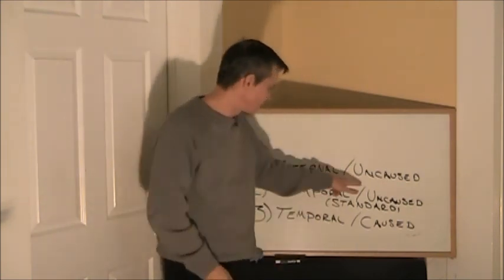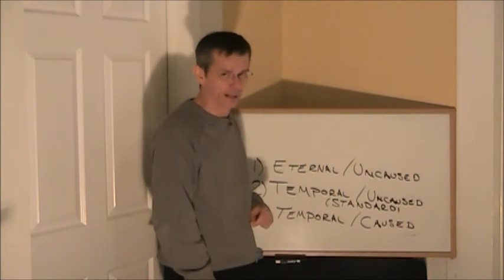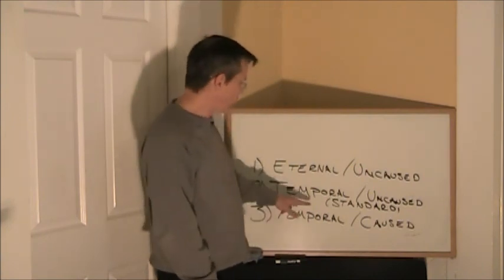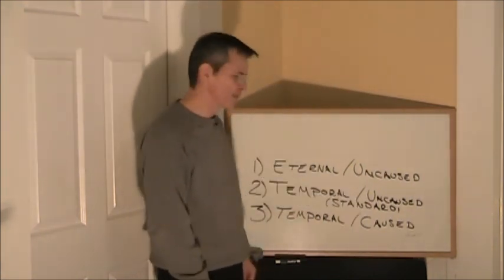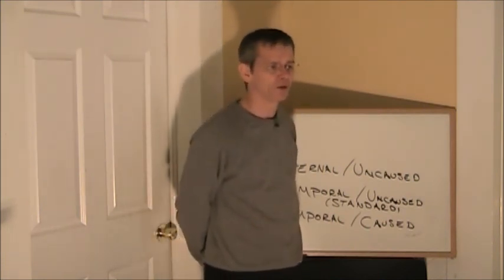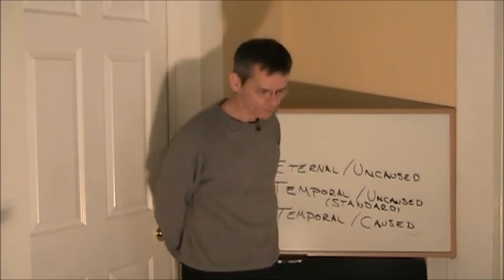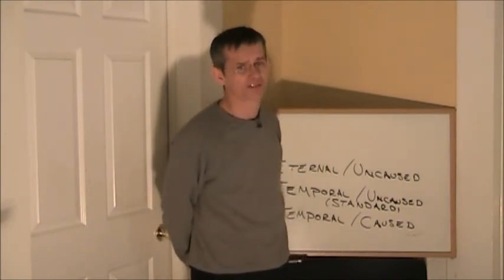So, if you're going to hold to the eternal uncaused, you may do so, but at the cost of going against science. If you're going to hold to the temporal uncaused, the standard model, you're going to have to do so at the cost of going against logic. You're going to say, well, everything we know came out of nothing. Do I even have to go into the impossibility of that?